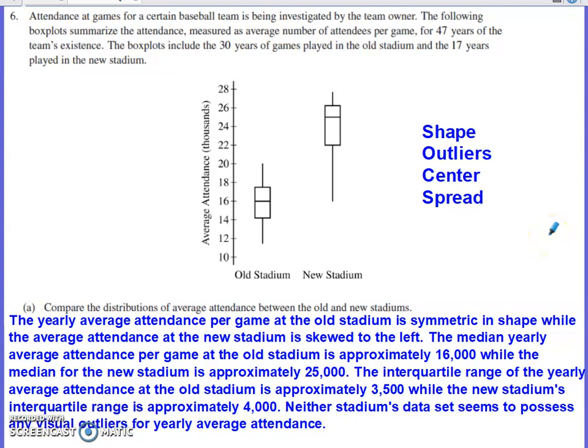This video will discuss problem number six from the 2021 AP Stats exam. Problem number six is always what we refer to as the investigative task. It's designed to take longer than the first five free response questions, and it spans several different units of study from the AP Stats curriculum. In 2021, problem number six is talking about attendance at games for a baseball team being investigated by the team's owner.